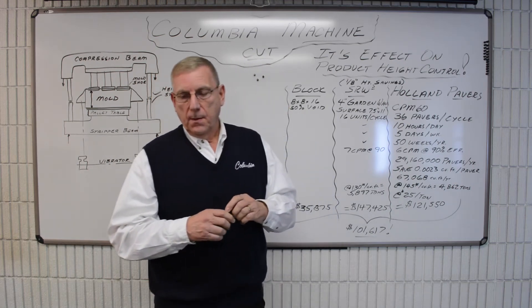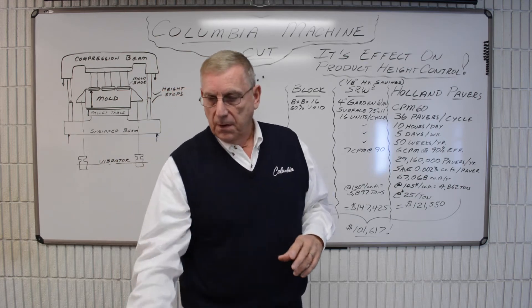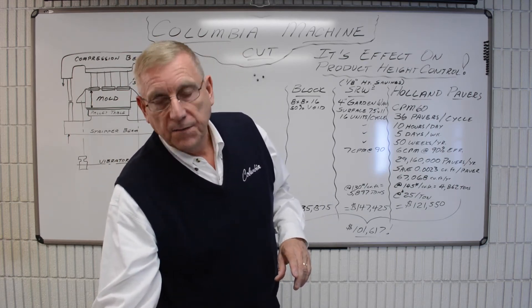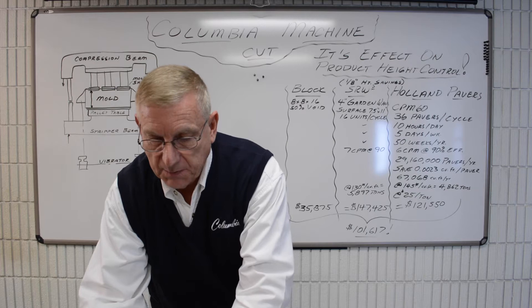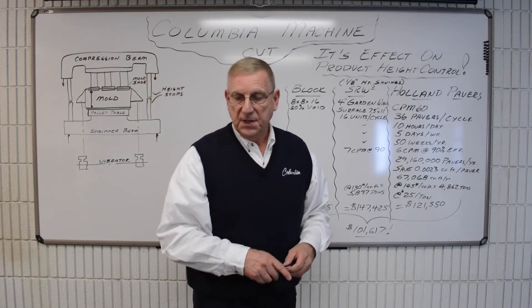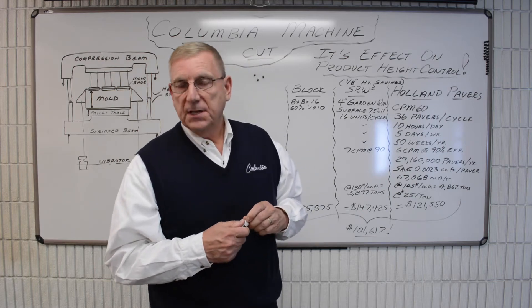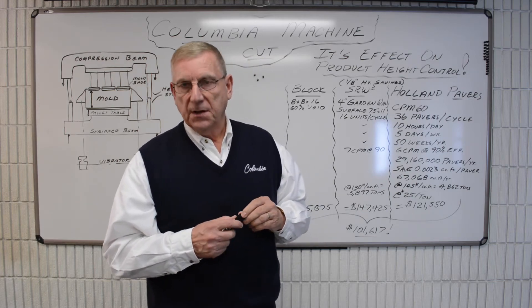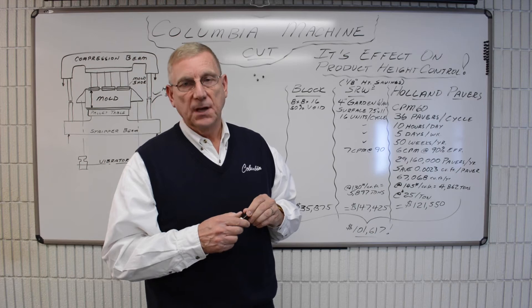Now, making pavers, if you're thinking of producing a 60 millimeter tall paver, which is an imperial size 2 and 3/8 inch, ASTM C936 allows plus or minus 1/8 inch in height tolerance.